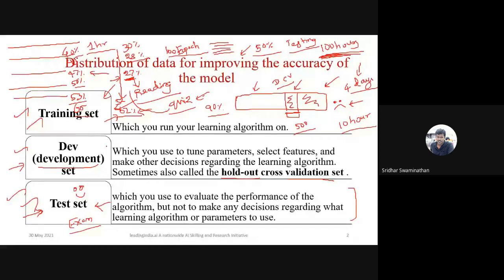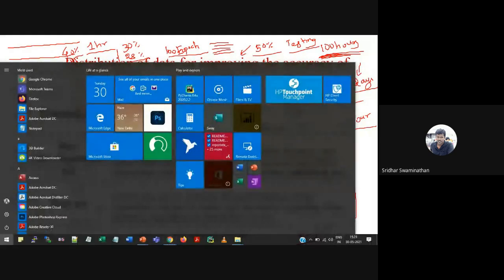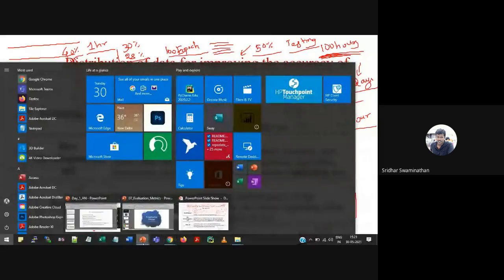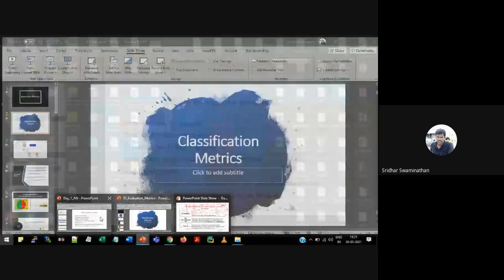Most of the time — 90% of the time — people use only training and testing sets, and sometimes a validation set if the training process is long enough. There is one more important technique called k-fold cross validation. Let me give an example of what k-fold cross validation is and where we can use it.